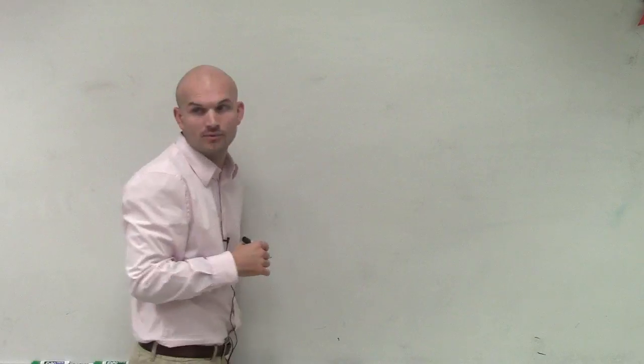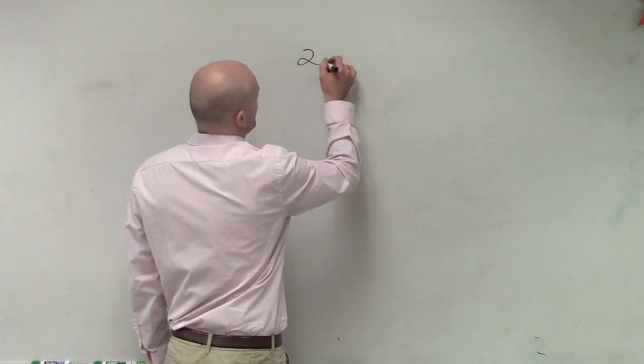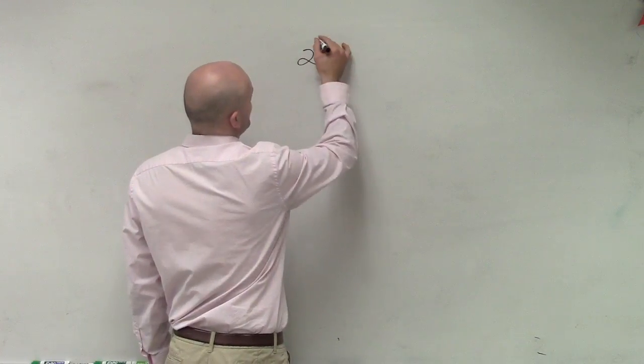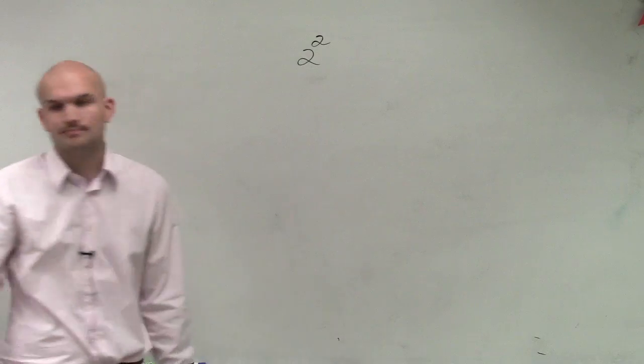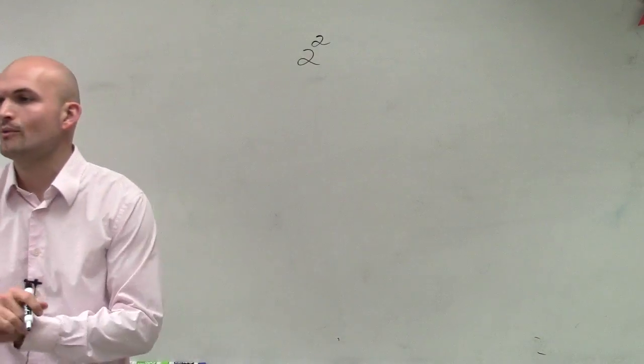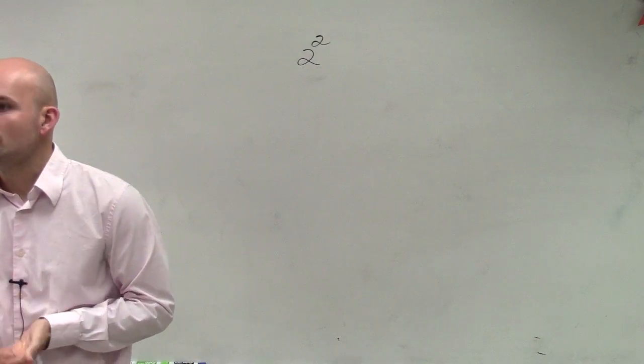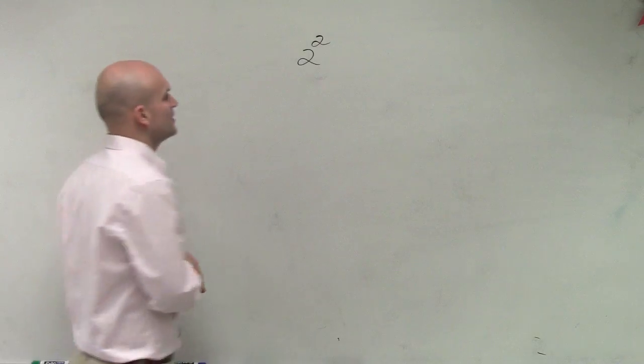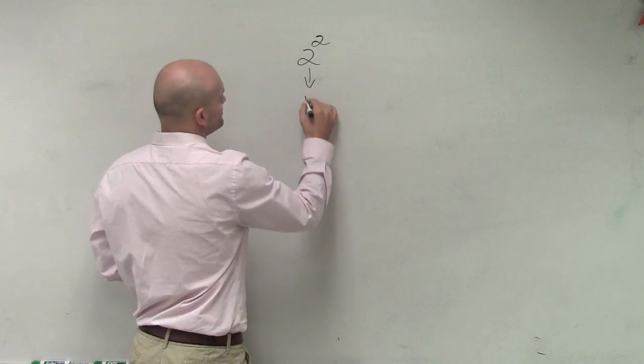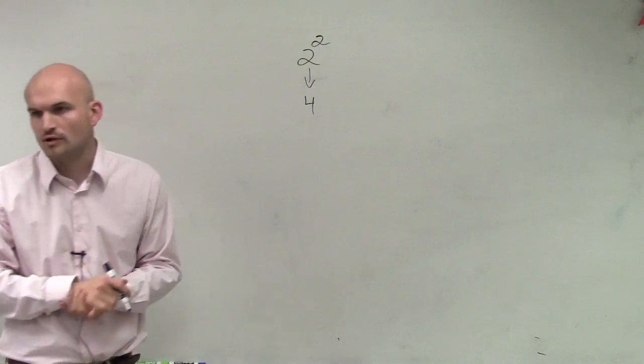So let's go back and review what we've already learned. Let's just go with 2 squared. So when we had an integer, right? First of all, when we dealt with integers, we figured out 2 squared equals 4. Very basic.